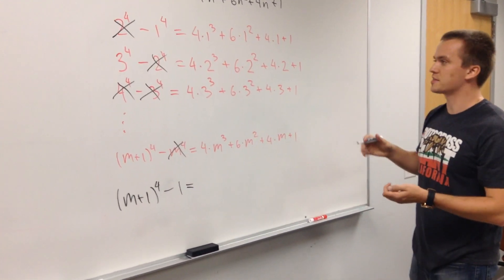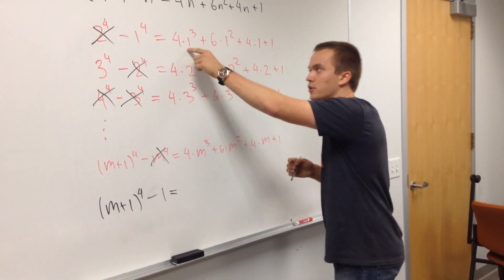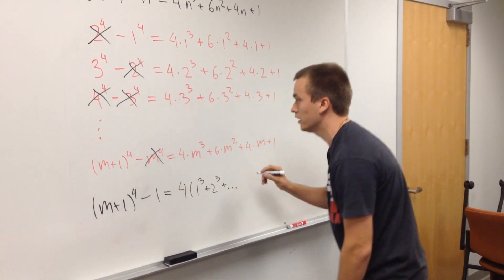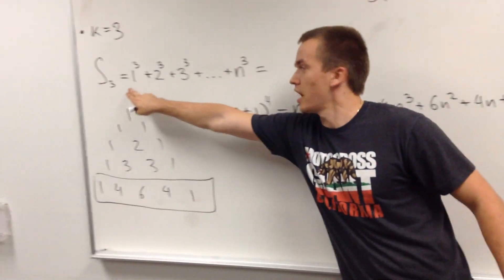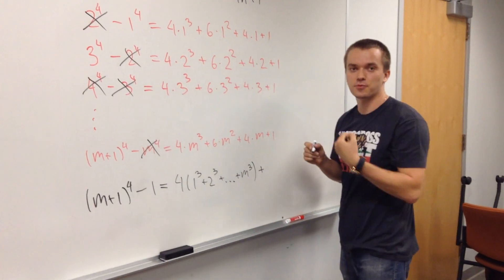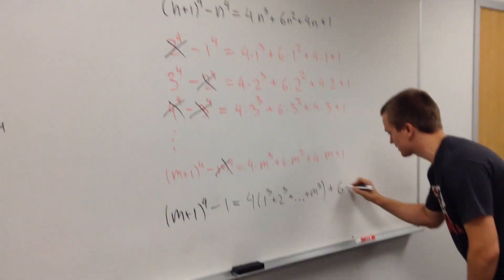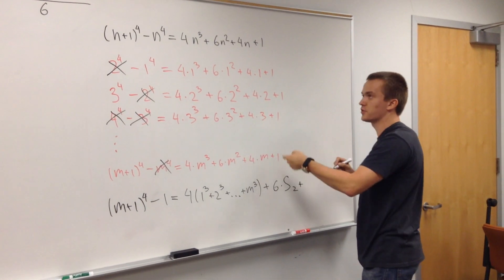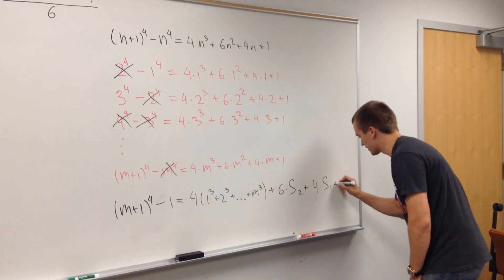What I will have on the left side. On the left side, 4 is a common factor for each of this term. And each of this term, 1 cube, so let's factor this. I have 4, 1 cube, plus 2 cube, plus tatatat, plus m cube. And this is our unknown sum is S3. But what about next terms? Here I have the sum of squares, and the sum of squares is S2. So it's going to be equal plus 6 S2. What about this sum? This sum is the sum of 1, 2, 3, etc., and this is S1. So plus 4 times S1. And the last one plus S0.